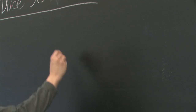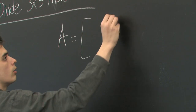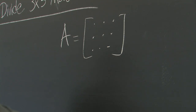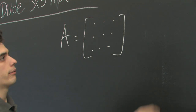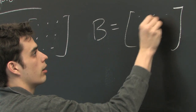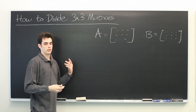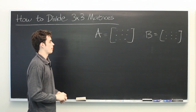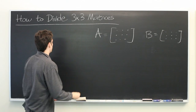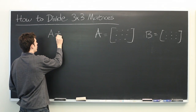Suppose that we have some matrix A, which is 3 by 3. And suppose that we also have another matrix B, which again is 3 by 3. Multiplying these is fairly simple if you're familiar with matrix operations. But an interesting question is: can you divide these? Is there a natural way to come up with a formula for A divided by B?